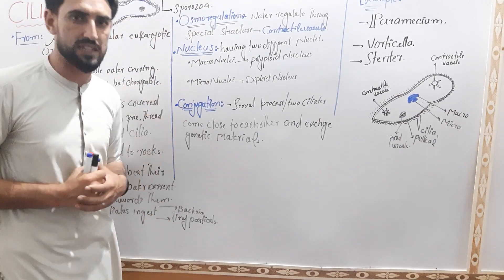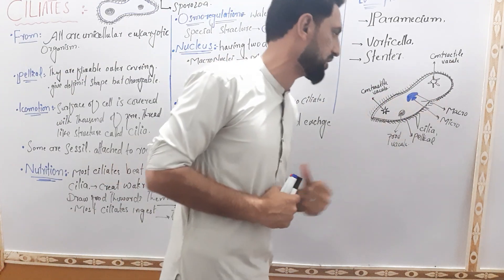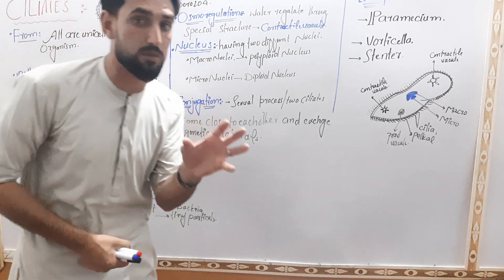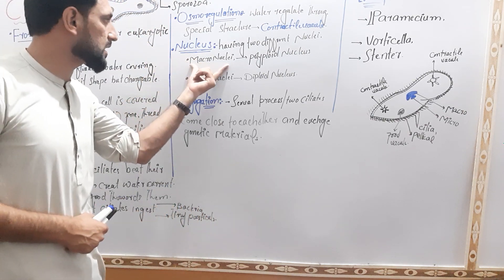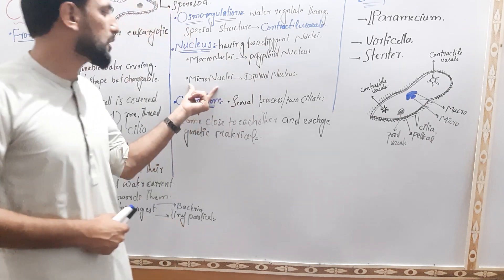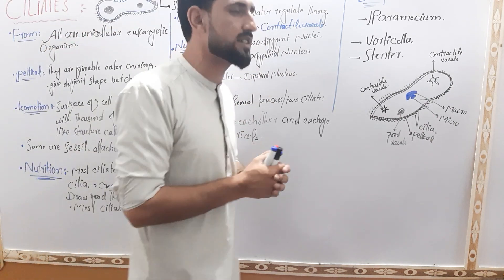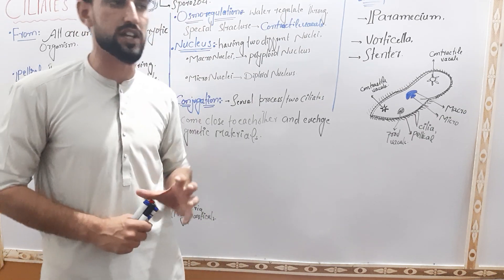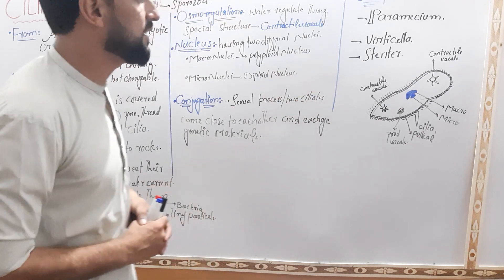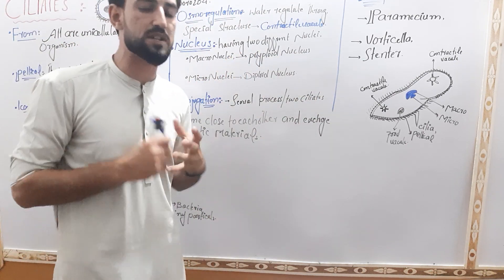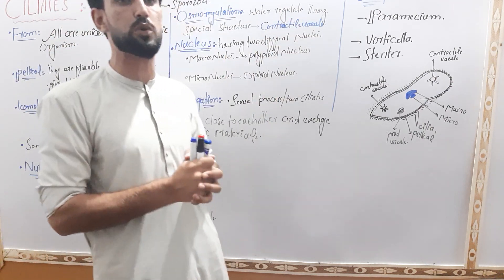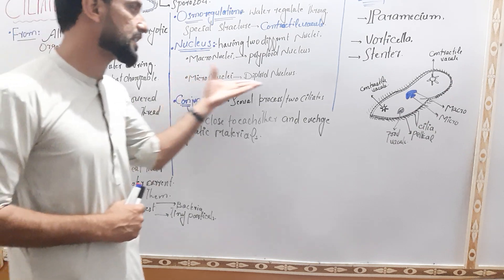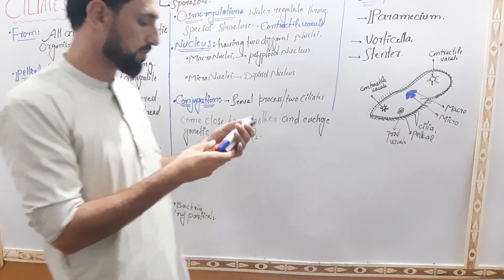Next is the nucleus. The ciliates have two nuclei: the macronucleus and the micronucleus. The macronucleus is large and polyploid — meaning it contains many sets of chromosomes. The micronucleus is diploid, containing two sets of chromosomes. Polyploidy is an important genetics term.